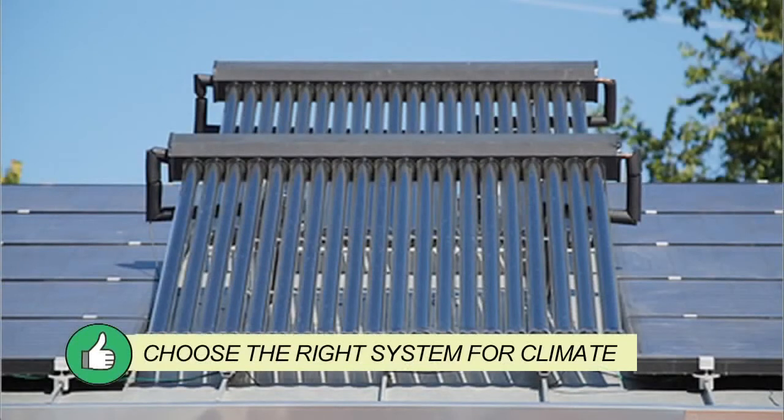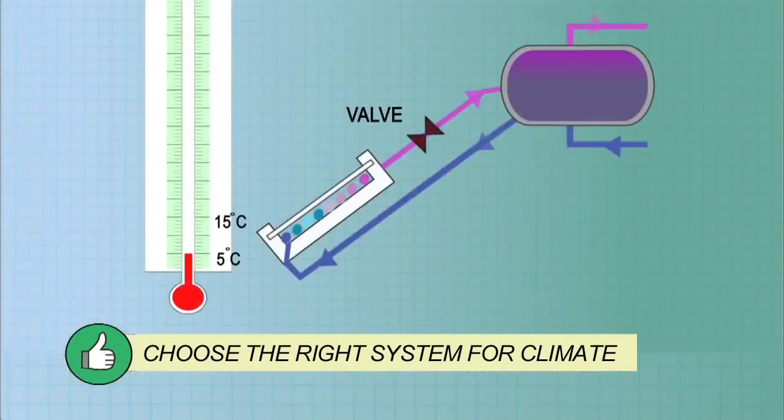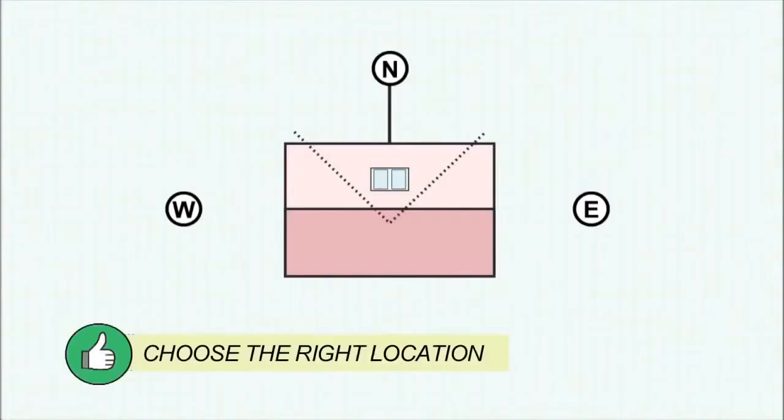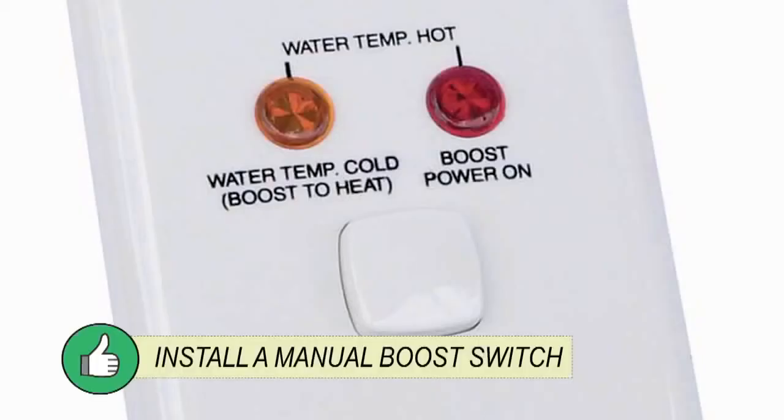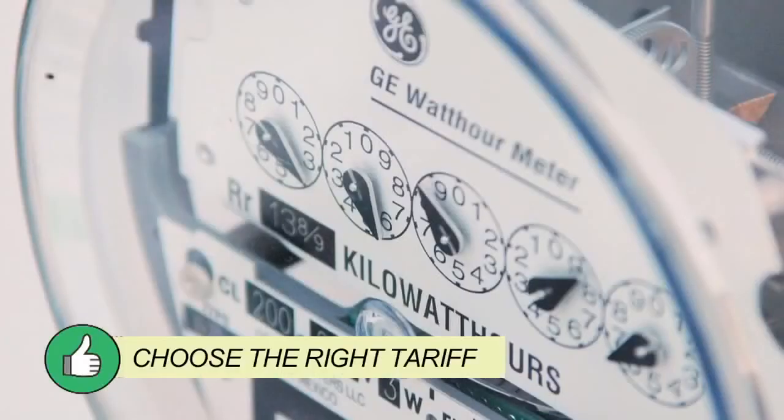So, select the system for the climate and use appropriate temperature controls. Locate the collector and tank to maximize performance. Install a manual boost switch and connect to a tariff which minimizes emissions and costs.